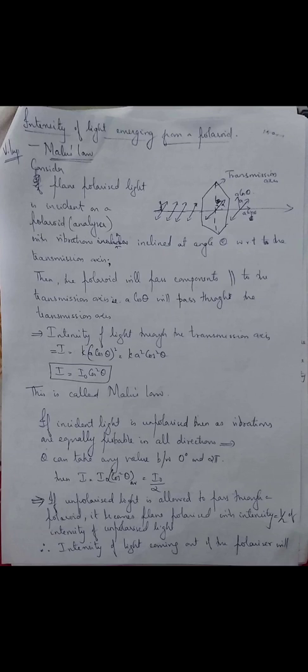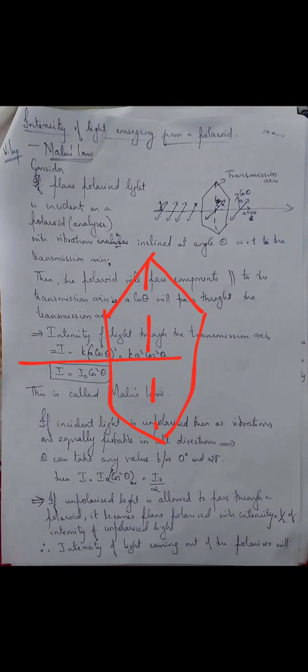Next, what you have to learn is something called Malus's law. Using Malus's law we determine the intensity of the light emerging out of a polarizer or a polaroid. Suppose a beam of plane polarized light is incident on a polarizer so that its transmission axis is given like this. This dotted line represents the transmission axis of the polarizer.